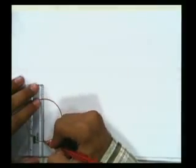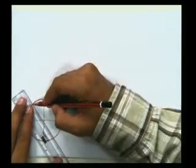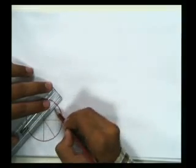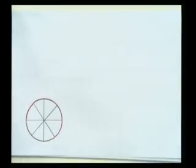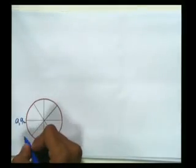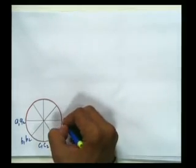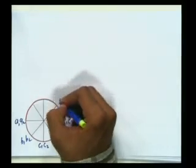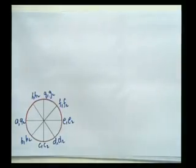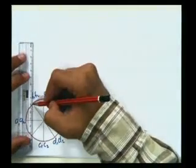Dividing things into parts is a great practice in engineering graphics. Now divided into eight parts, being a cylinder you will have two points - a1, a2 top and bottom; b1, b2; c1, c2; d1, d2; e1, e2; f1, f2; g1, g2; h1 and h2. We shall move on and draw the projectors upwards.